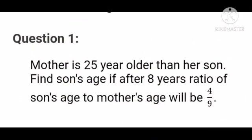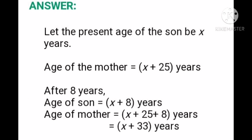Practice Set 12.2, Question No. 1: Mother is 25 years older than her son. Find the son's age if after 8 years the ratio of son's age to mother's age will be 4 upon 9. Let the present age of the son be x years. Age of the mother is equal to x plus 25 years.